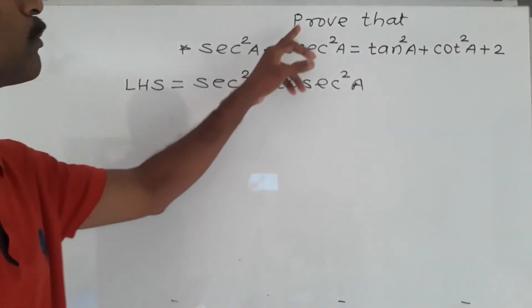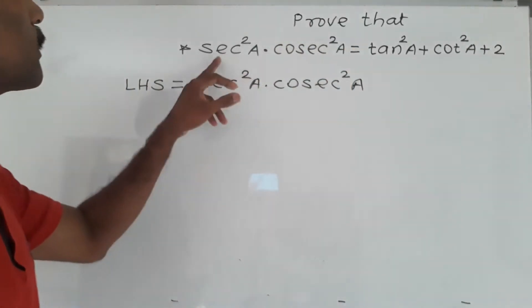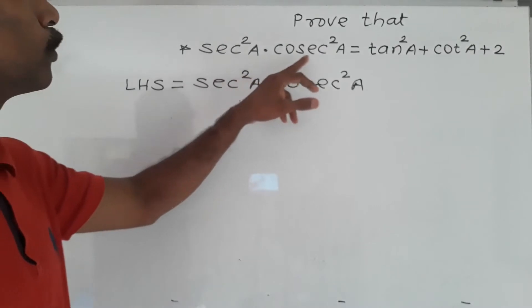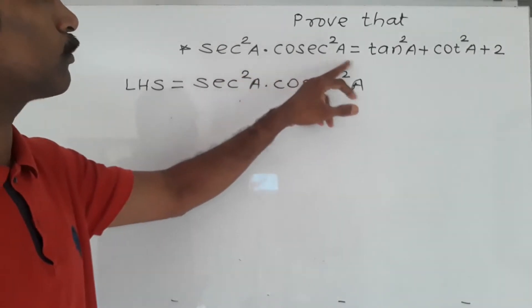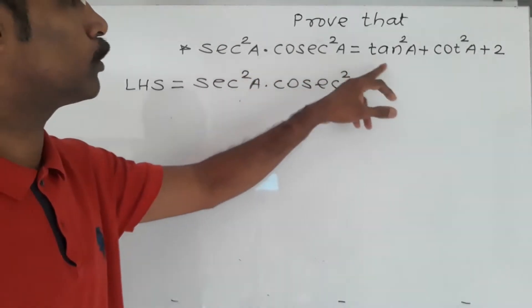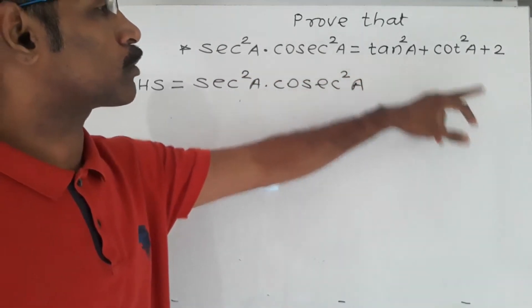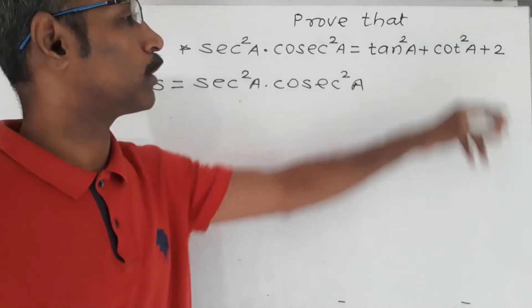Hello friends. Prove that sec square A into cosec square A is equal to tan square A plus cot square A plus 2.